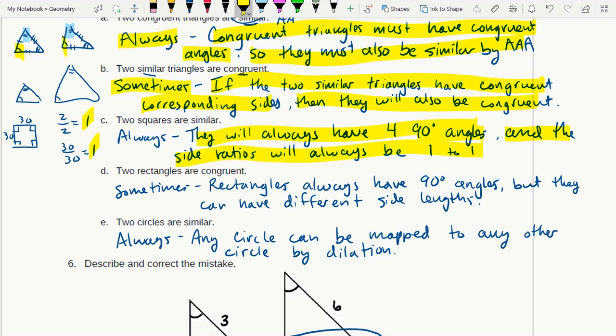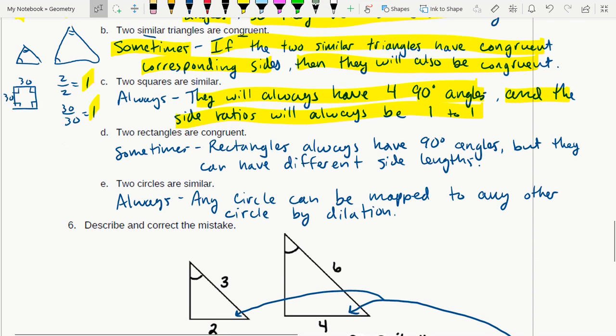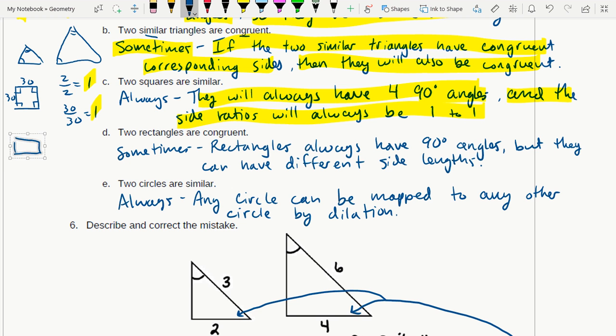The side ratios of any two squares are always going to be proportional because they're always going to be one. Two rectangles are congruent - that's possible, right? I could imagine two congruent rectangles, that's fine, but they obviously don't have to be congruent because I could also imagine two non-congruent rectangles.